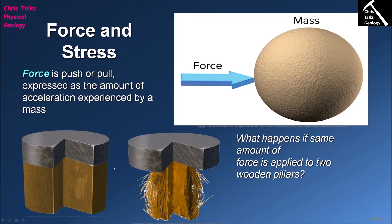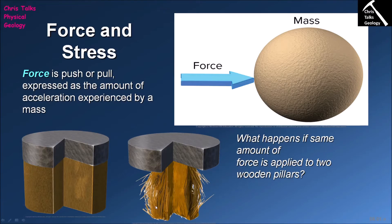In this model we have two wooden pillars, and on top of each we have a disk representing a metal weight — the same disk in both instances, so the same mass. With the left-hand wooden pillar, the diameter of the pillar equals the diameter of the metal disk, so the weight is applied evenly over a relatively large area, and the wood is not deforming — it's perfectly happy. The wooden pillar on the right is noticeably thinner, with a lower diameter, meaning the same weight is being applied over a much smaller surface area.